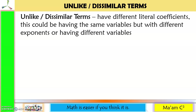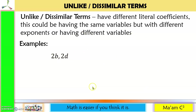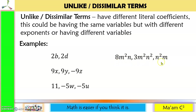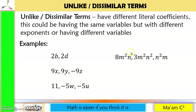Next one: unlike or dissimilar terms. These are terms that have different literal coefficients. This could be having the same variables but with different exponents, or having different variables altogether. Samples: 2B and 2D — B and D are different variables. x, y, z — different variables. W, N, U — different variables. M squared N, M squared N squared, N squared M — they all have the same variables M and N, but the exponents differ. M is raised to the second power in the first, but only the first power in the third. N is raised to the first power in the first, but second power in the other two. Nothing is exactly the same, so dissimilar terms.